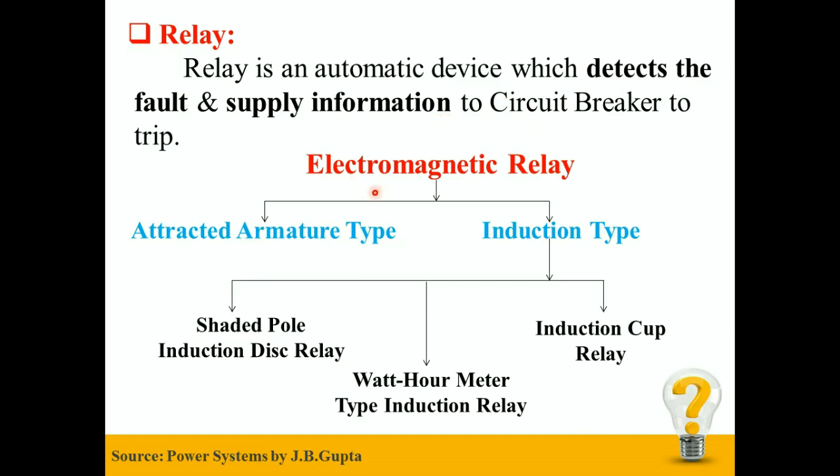Electromagnetic relay - there are two types: first is the Attracted Armature Type and second is the Induction Type. I have already explained the Attracted Armature Type Relay in the previous video. You can watch that video; I have given the link in the description.